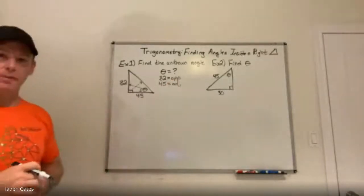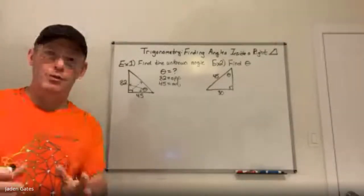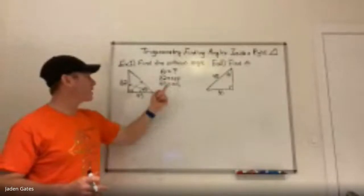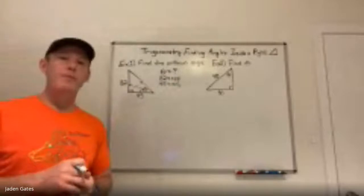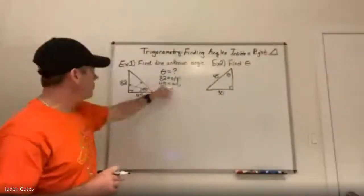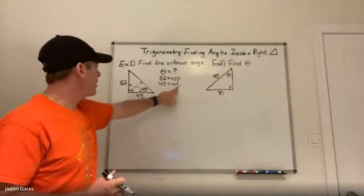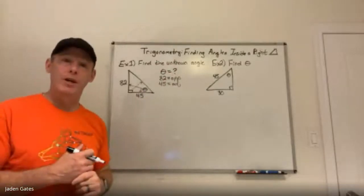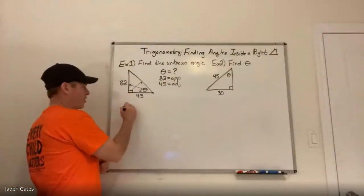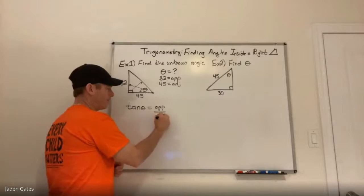Step one: write down the information you know. Step two: which trig ratio do you have to use? You don't get to choose — you have to use the one that includes the opposite and the adjacent. Using our memory phrases: sine on highway uses opposite and hypotenuse — no hypotenuse. Cosine at home uses adjacent and hypotenuse — no hypotenuse. So I'm down to tan, which uses opposite and adjacent.